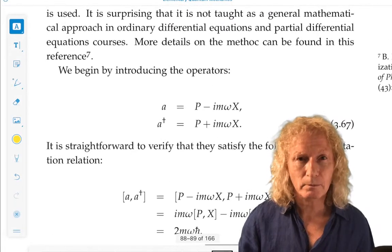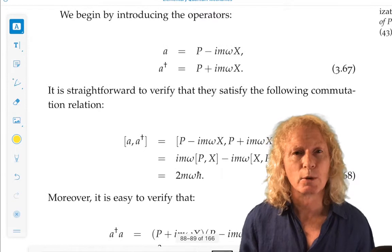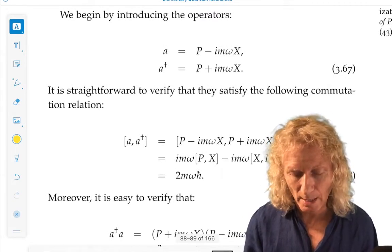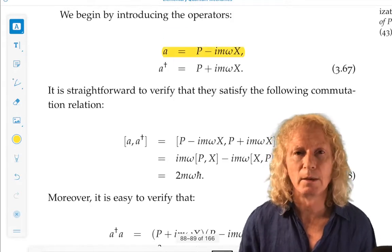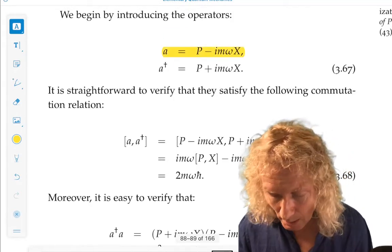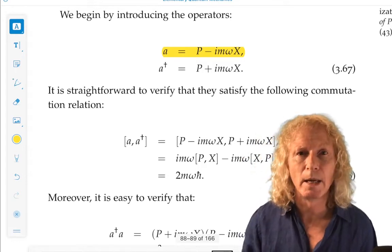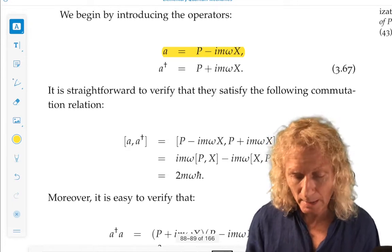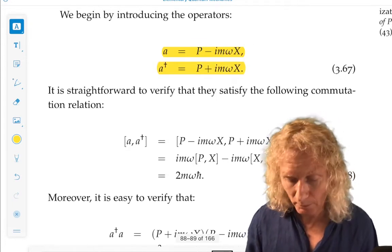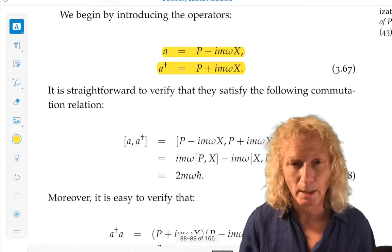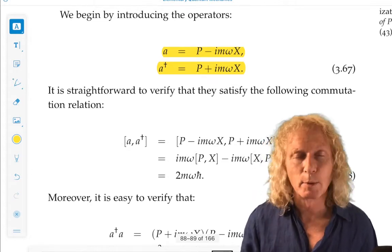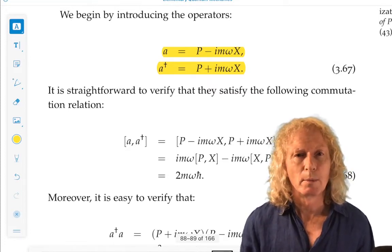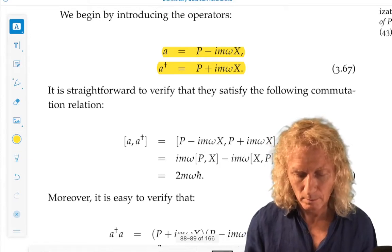Okay. So we begin by introducing two operators which are the key for everything we do. A, which is P minus i m omega X and called it a. And a dagger, which is P plus i m omega X. That i is important. And uppercase P, uppercase X are the momentum operator and position operator. Okay.